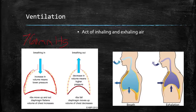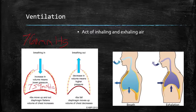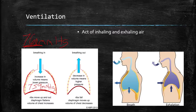760 millimeters of mercury is atmospheric pressure — that's all around us. When we increase the volume of the chest, we have more volume to fill, so the pressure inside our chest falls to about 759. We know that air is going to want to go from high pressure to low pressure. Because the air pressure outside of our body is higher than the pressure inside, air is going to rush into our lungs. That is essentially how we get air into our lungs.